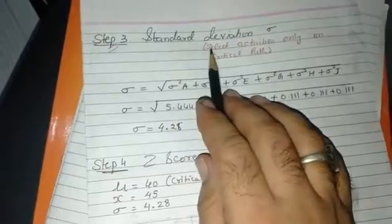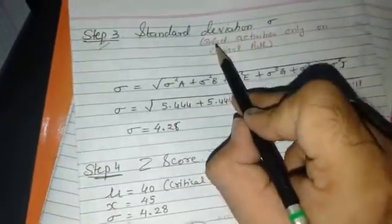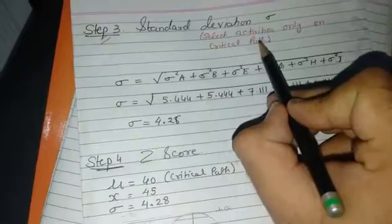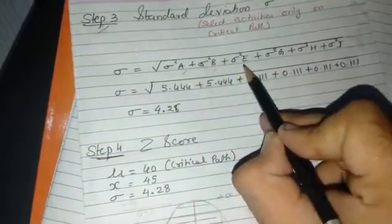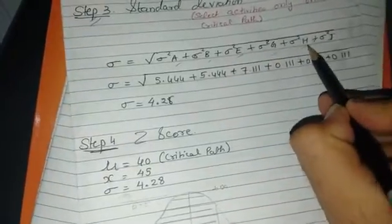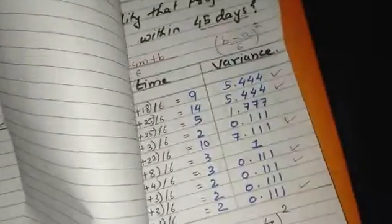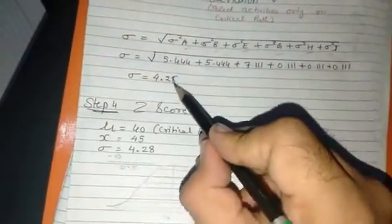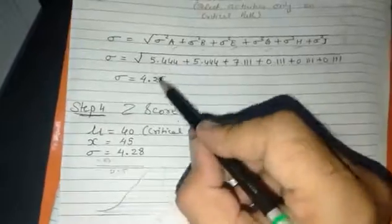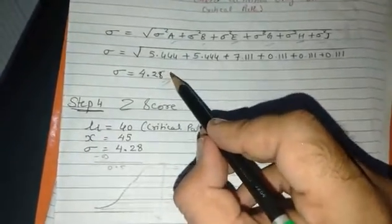After that, step 3 is finding out standard deviation. Remember this thing: we have to select the activities who are on critical path. Critical path activities were A, B, E, G, H, and J. So we have to see the variance of those activities. We have to just add it and do the square root. So you will get the standard deviation, which is 4.28 in this sum.